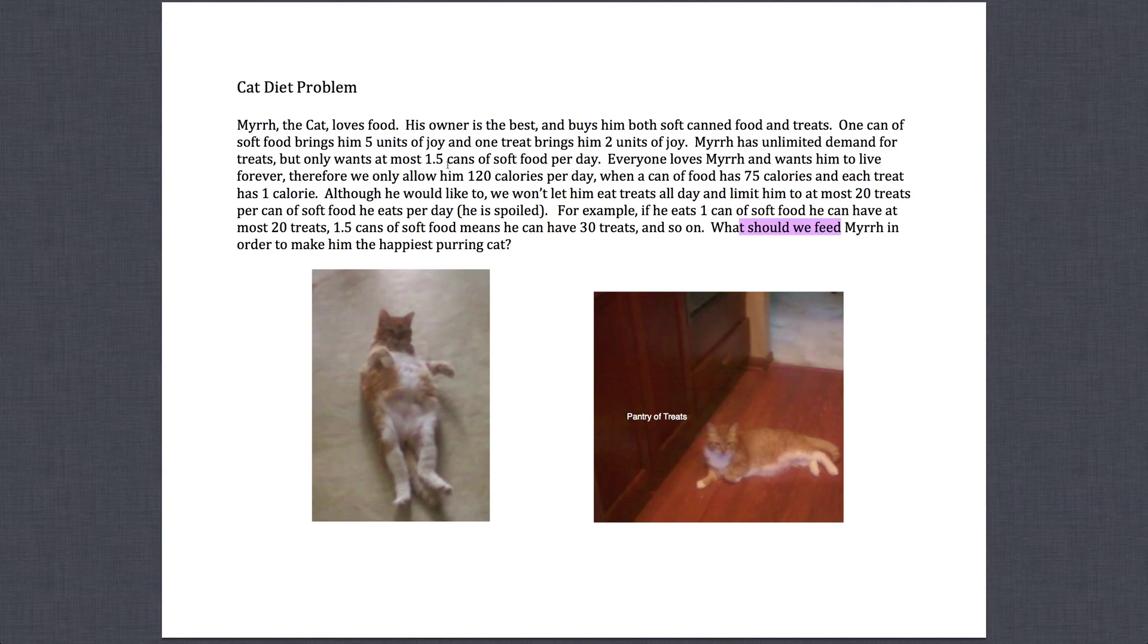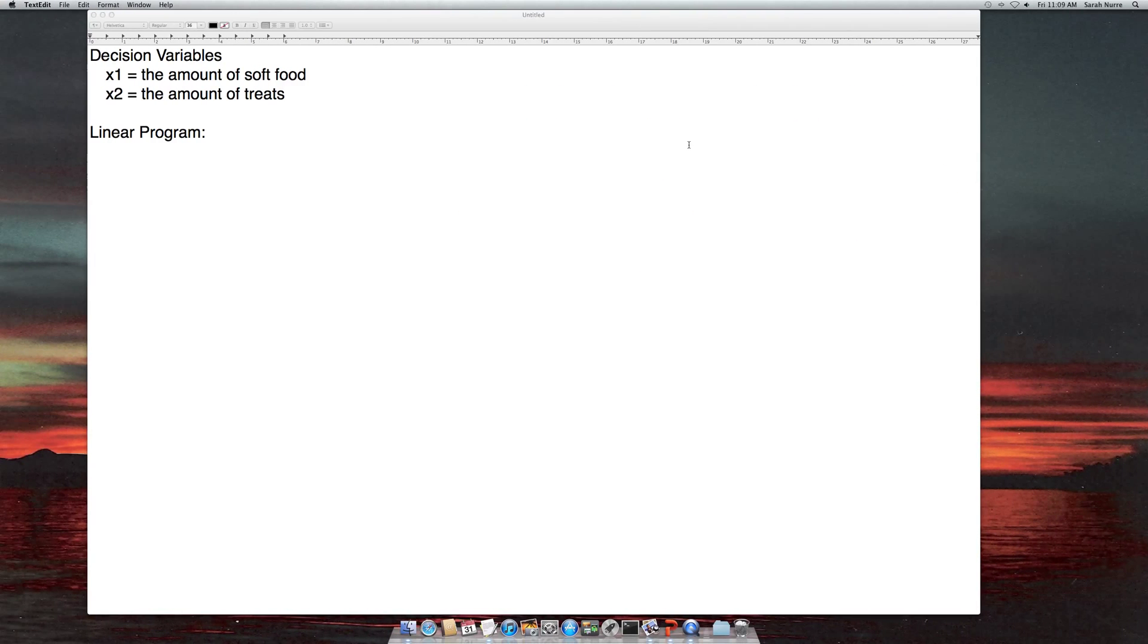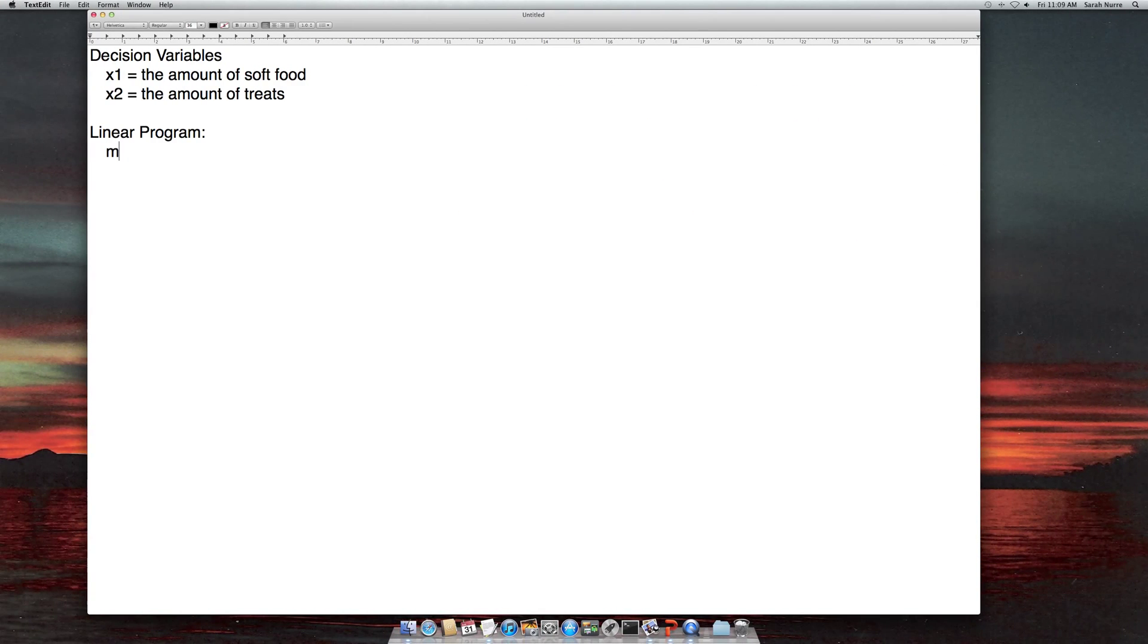And then x2 equals the amount of treats he has, and again we can break up treats. And so with this now we want to come up with our linear program. We know we want to make him happy. We need an objective function. So to make him happy he gets five units of joy from a can of soft food and two units of joy per treat. So with that we can formulate it as a maximization problem where we want to maximize five times the amount of soft food he has plus two times the amount of treats he has. So that's our objective function.